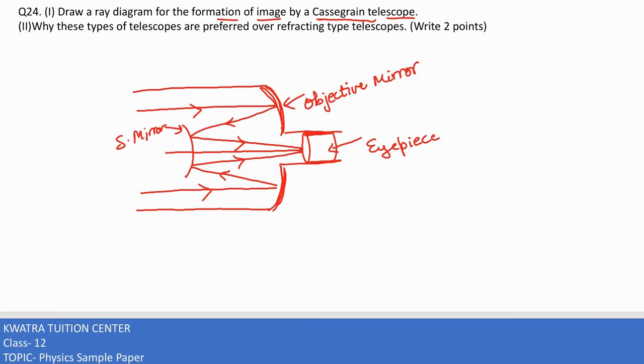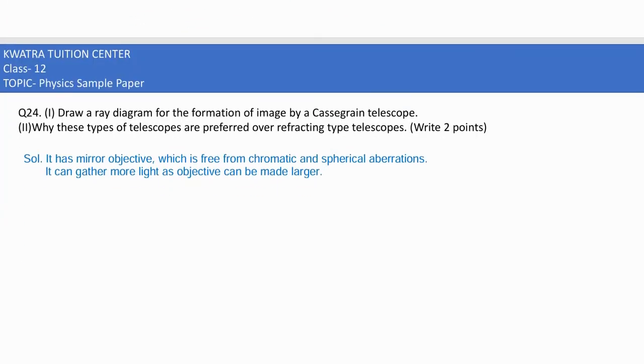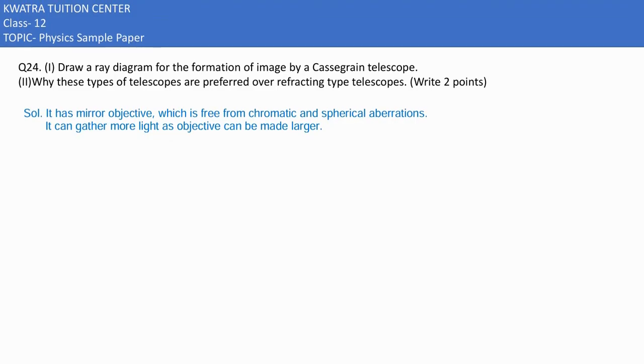Now they are saying in the second part, why these types of telescopes are preferred over refracting type telescopes. Why are we using the mirror? Let's see.